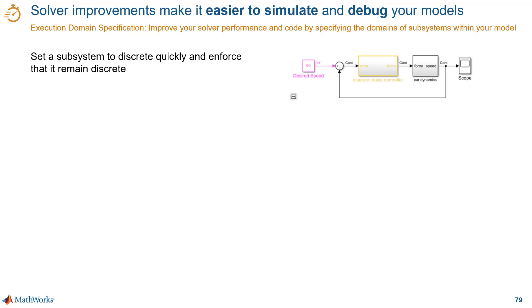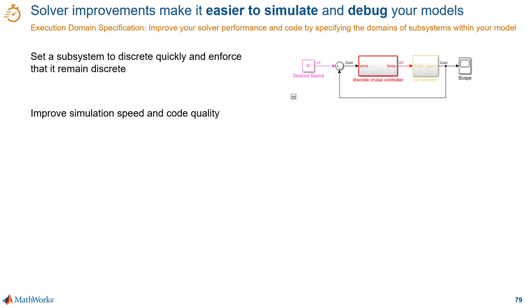For instance, in this model on the right, the controller of the model has a yellow sample time legend, which means hybrid, because there is a continuous signal going into blocks in that subsystem. As a better alternative, we can configure the subsystem to be discrete. By doing that, I can improve simulation speed and code quality because I reduce the number of solver resets.